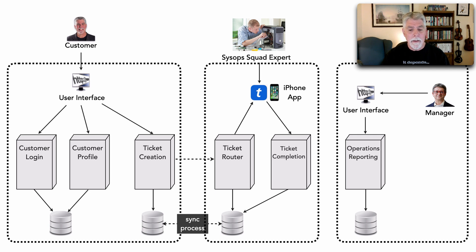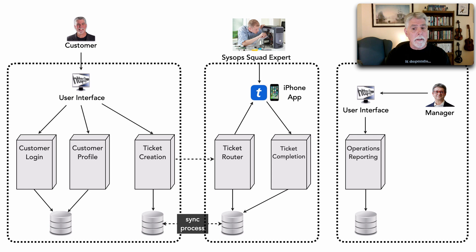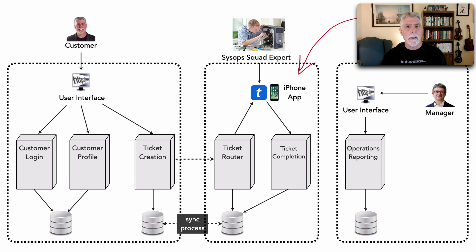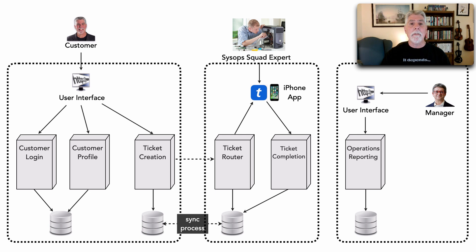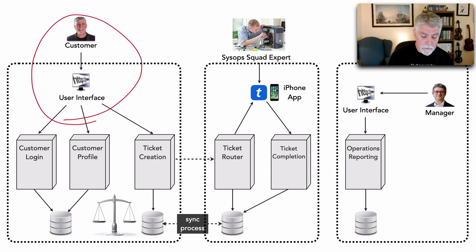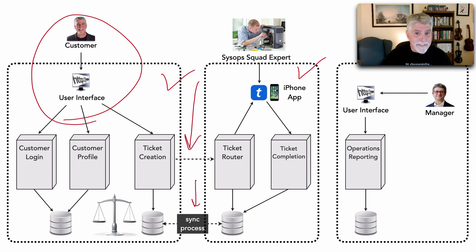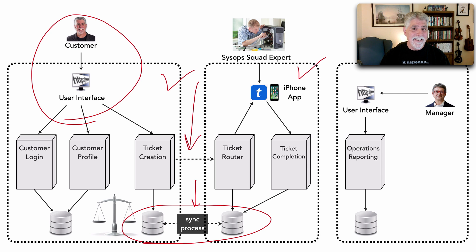Now ticket creation, customer profile, and login are all customer-facing operations that need to be highly available, scalable, responsive, and fault tolerant. The second quantum is more backend — we only have a few experts, so we don't need the same scalability, fault tolerance, or reliability required for external customers. But the trade-off here is data consistency and data integrity — those are the trade-offs we face when looking at an architectural quantum.